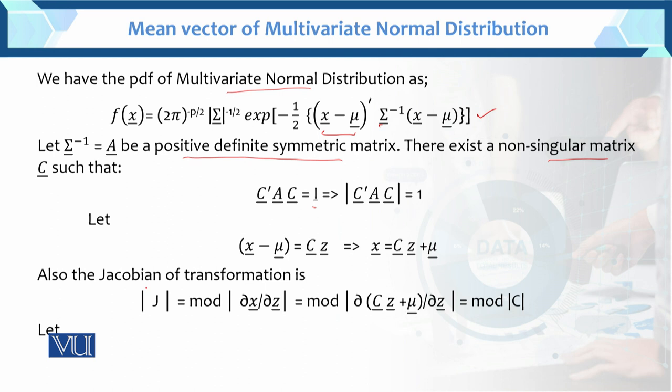After the Jacobian of transformation — two or more than two variables ke liye jab ham uski derivative lete hain, toh Jacobian use karna hai. Now Jacobian which is equals to mod of curly X over curly Z, kyunki second variable Z hai.